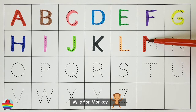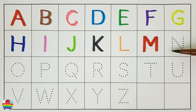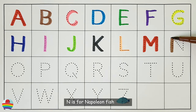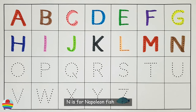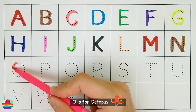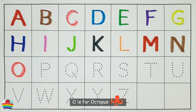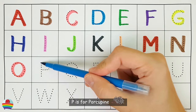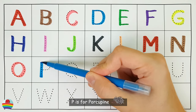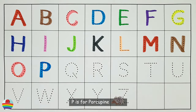M. M is for monkey. N. N is for napoleon fish. O. O is for octopus. P. P is for porcupine.